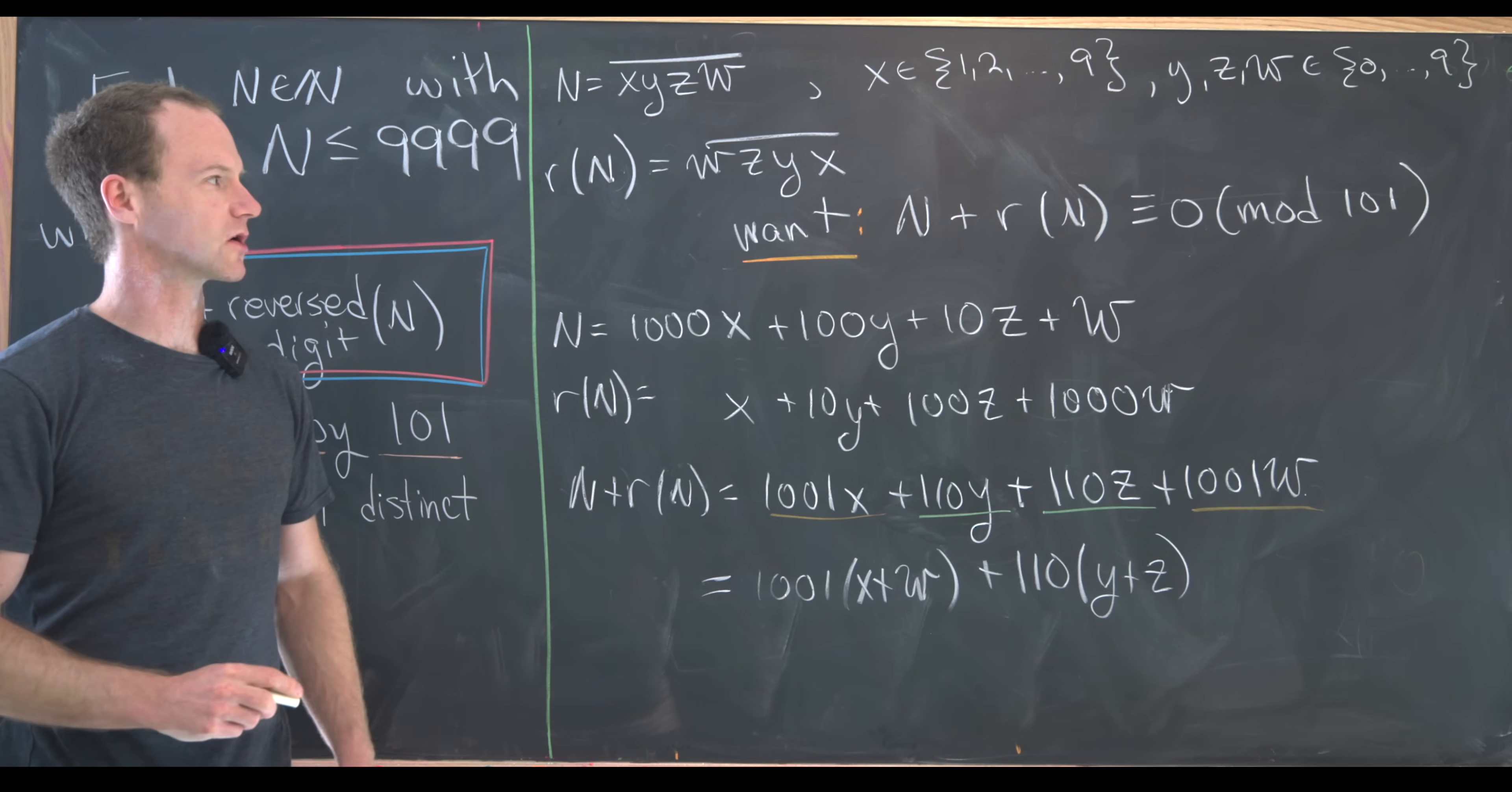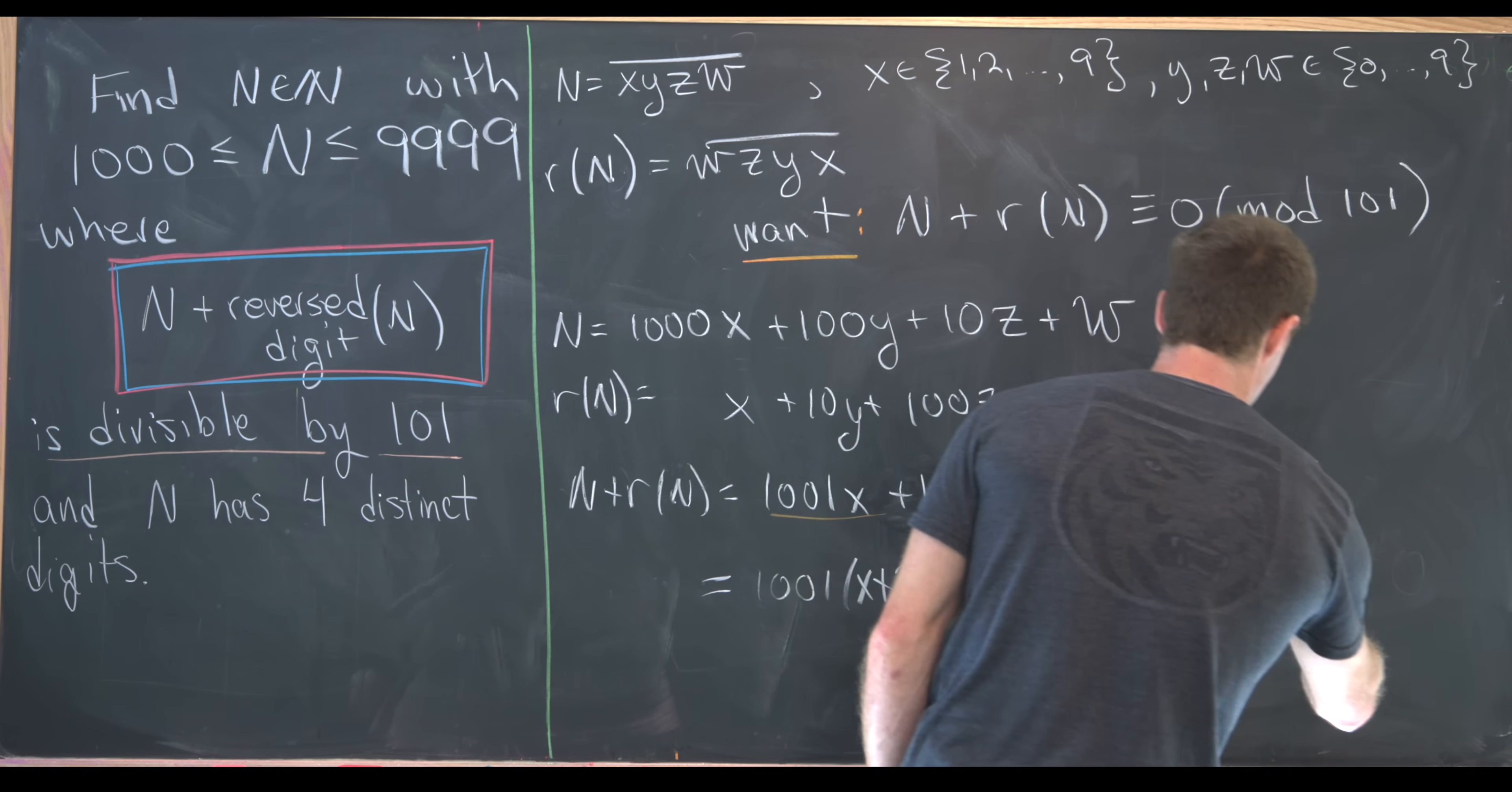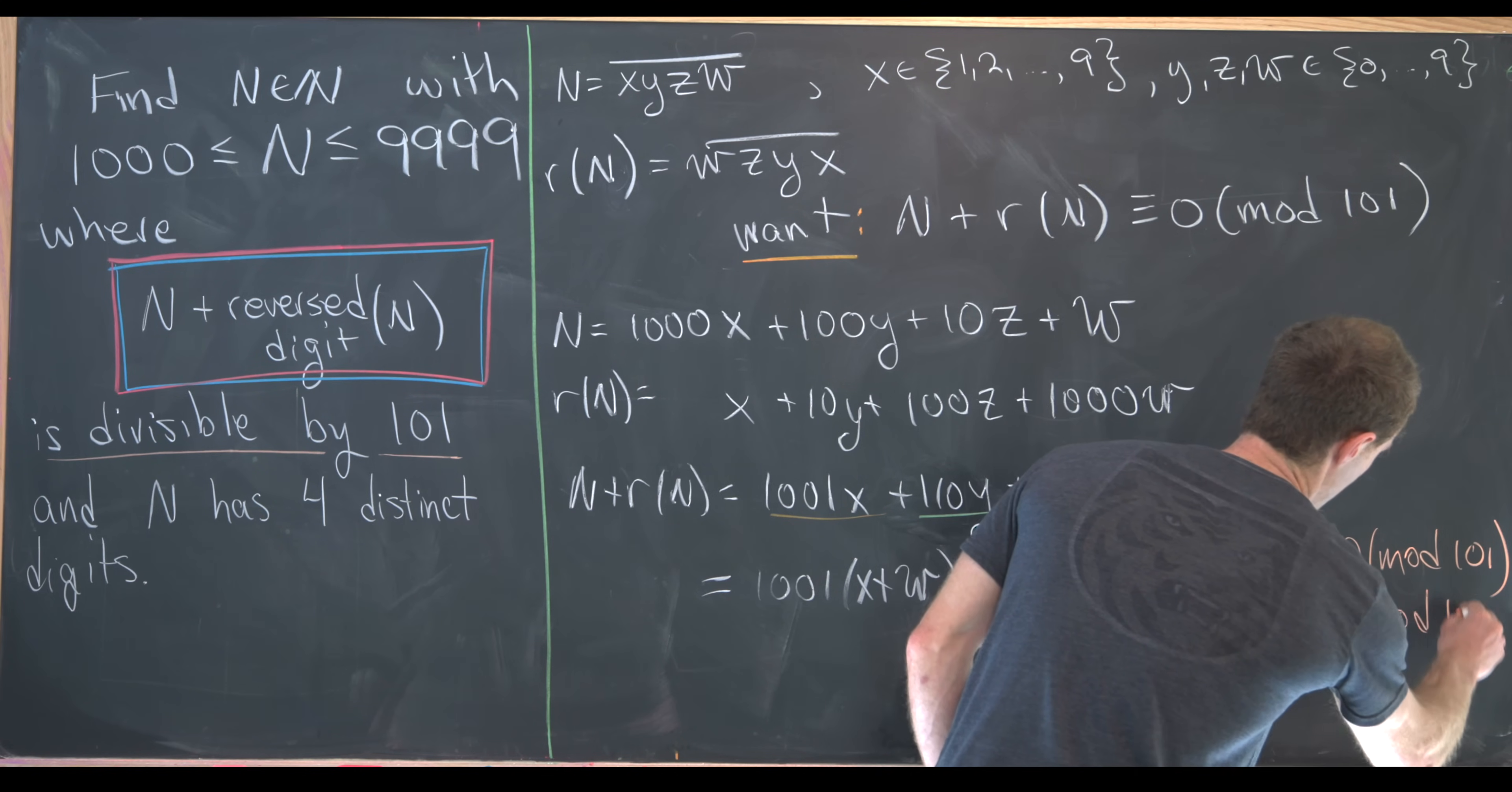And now let's recall that our goal is for this object to be congruent to zero mod 101. So maybe we should look into what 1001 and 110 are modulo 101. And that's not too hard to do. So it's easy to check that 1001 is congruent to 92 mod 101. And what I mean by that is if I divide 1001 by 101, I get a remainder of 92.